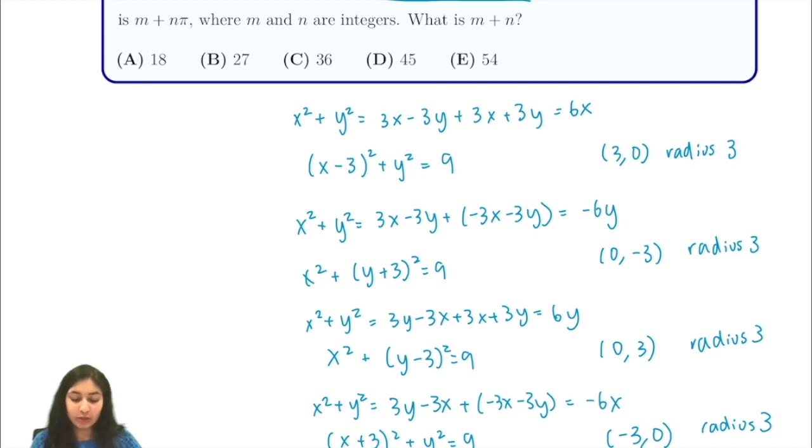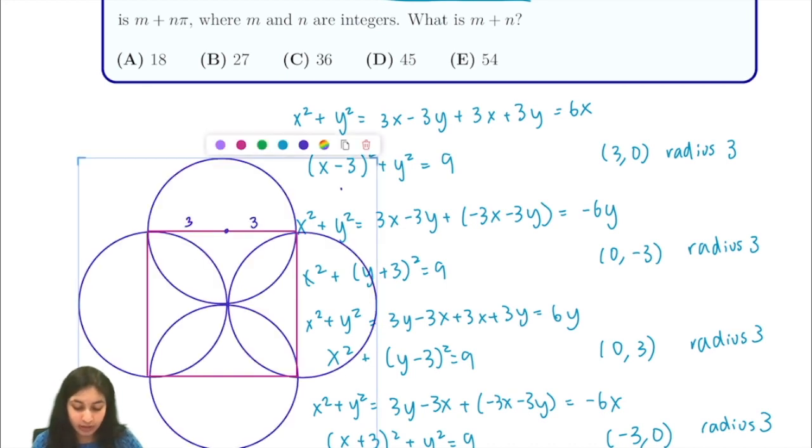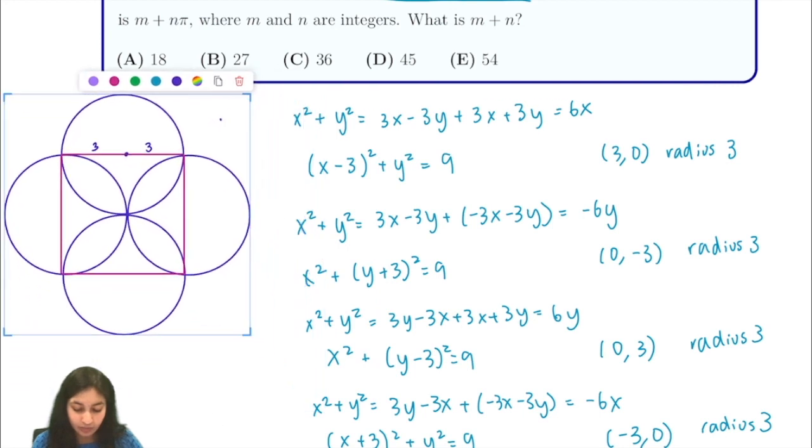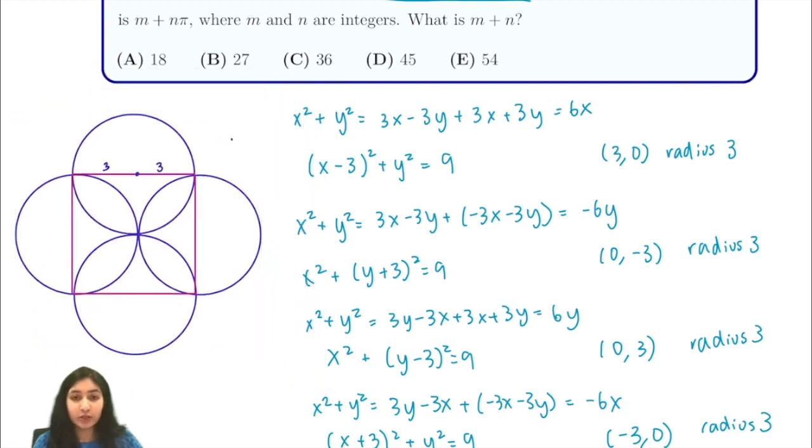So now that we have all the expressions, you can graph them and you'll see that it looks something like this. We have all these circles of radius 3, this is the point (0, 0).